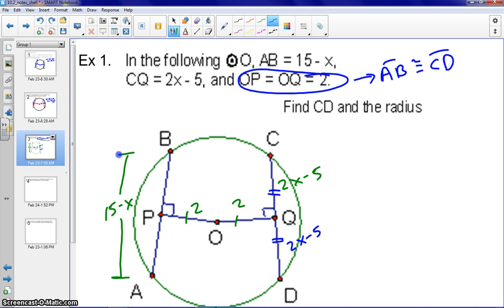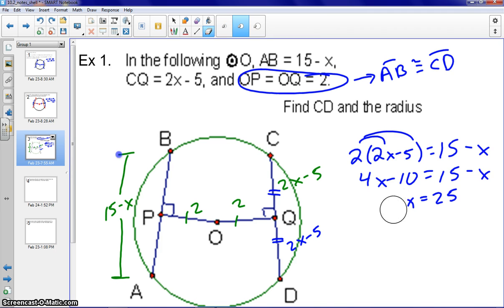from what we just discussed earlier, 2X minus 5, those two of them times 2 would be equivalent to the other chord AB, because they are both equidistant from the center. And then we could go ahead and solve from there. So when we subtract that over, we'll get the 3X, add over the 10, so we'll get that to be 25. I'm sorry, we want to add over the X, so that would give us 5X equals 25. Therefore, X would be 5.